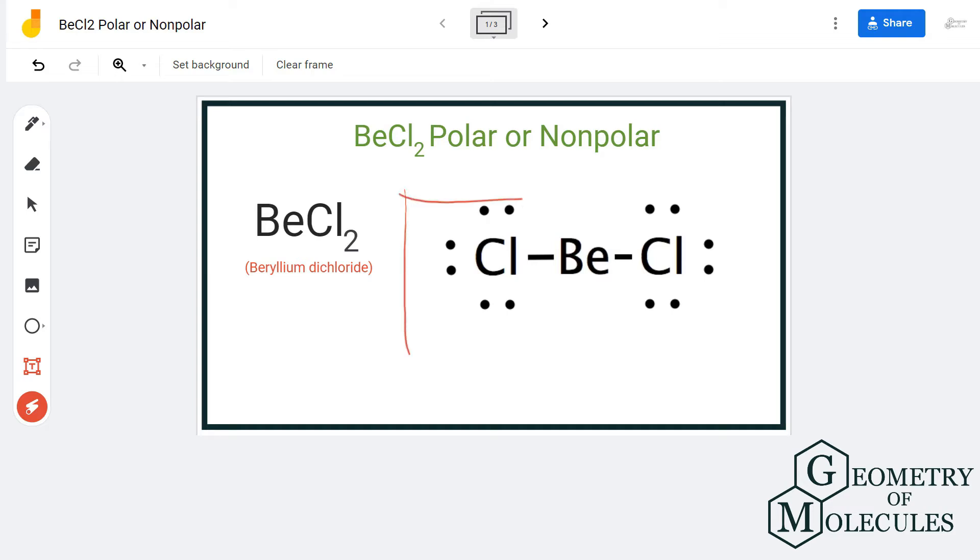This is the Lewis structure of BeCl2, in which the beryllium atom is forming a single bond with both the chlorine atoms. It is a linear molecule with a bond angle of 180 degrees, so even if there are dipole moments in this molecule, they will be cancelled out due to the symmetric distribution of atoms.